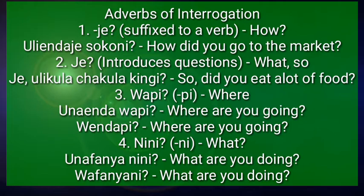The second usage: 'je' introduces questions at the start of a sentence. Example: 'Je, ulikula chakula kingi?' — did you eat a lot of food? The next adverb is 'wapi,' meaning 'where.'